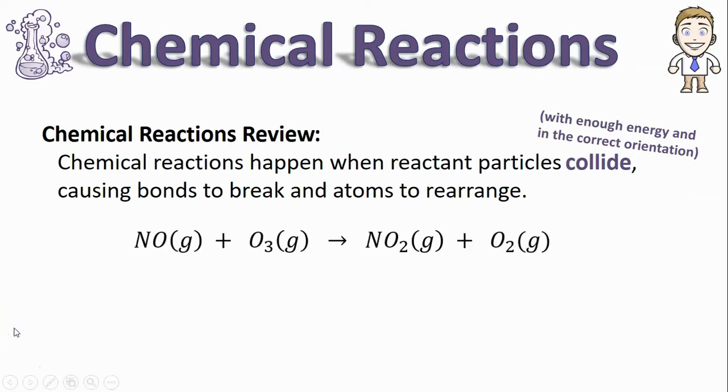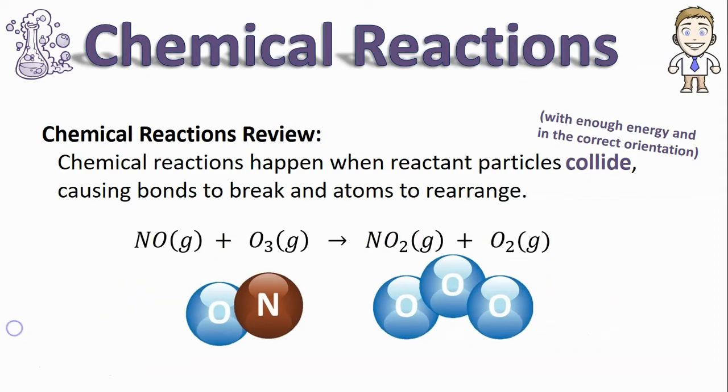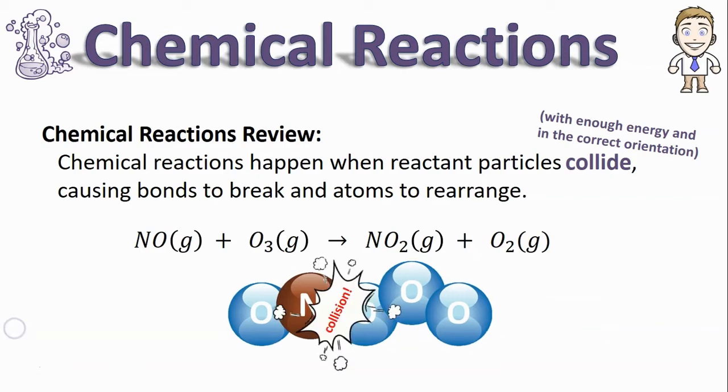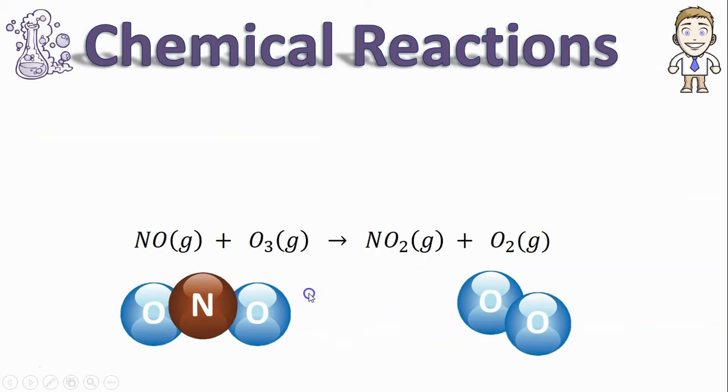this can cause bonds to break and the atoms to rearrange. We saw this where NO (nitrogen monoxide) collides with O3 (ozone). The particles are moving around, they collide with each other, and this oxygen atom breaks off, reattaches to the nitrogen, making our products NO2 and O2.